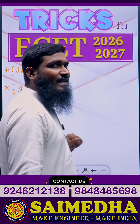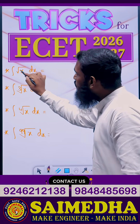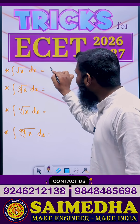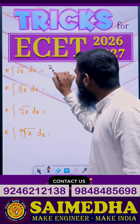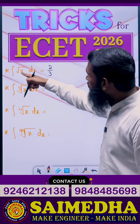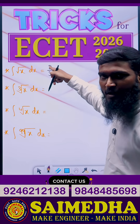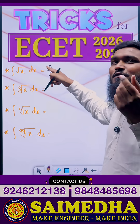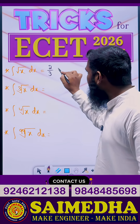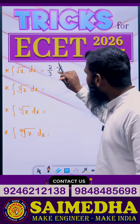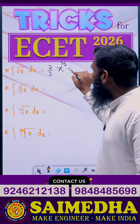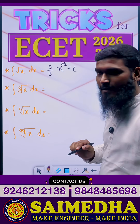See this part. Integral of root x dx — root x means which root? Square root. So I'll be writing 2 by 3. Square root means 2 we have taken, then we increase the number: 2 by 3 into x power 2 by 3. Then we do reciprocal: 3 by 2, plus C.